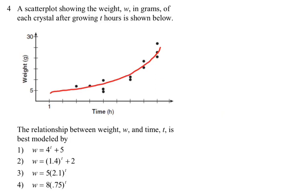On number four, if you approximate this one, you realize it will have a y-intercept, so choice 1 or choice 2 could be the answer. But the rate it's going up — if it's raised to the t power, it will go much faster than what's given. Therefore, choice 2 is the answer.